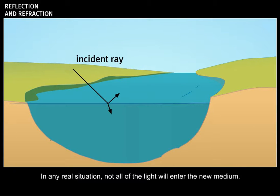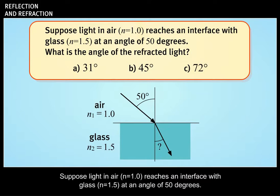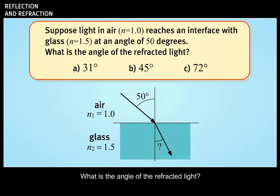In any real situation, not all of the light will enter the new medium. Some of the light will be reflected at the interface. Suppose light in air, n equals 1.0, reaches an interface with glass, n equals 1.5, at an angle of 50 degrees. What is the angle of the refracted light?